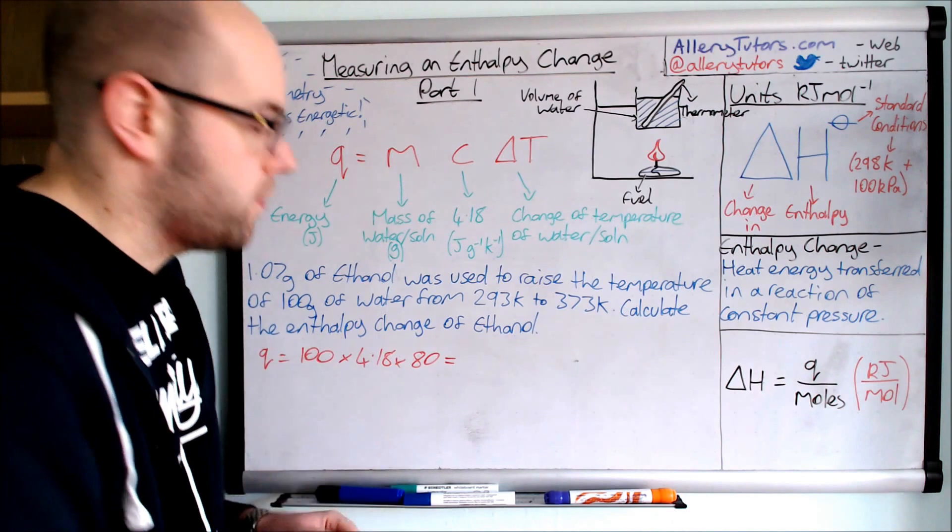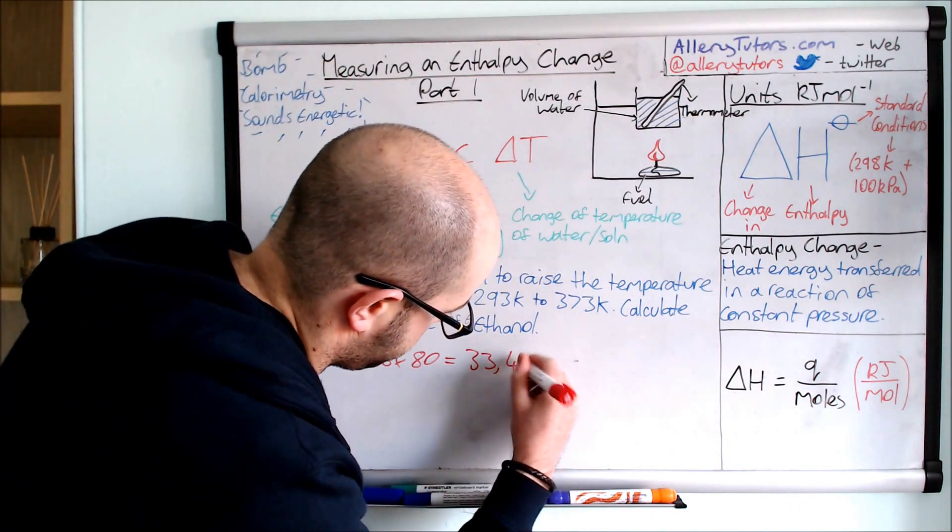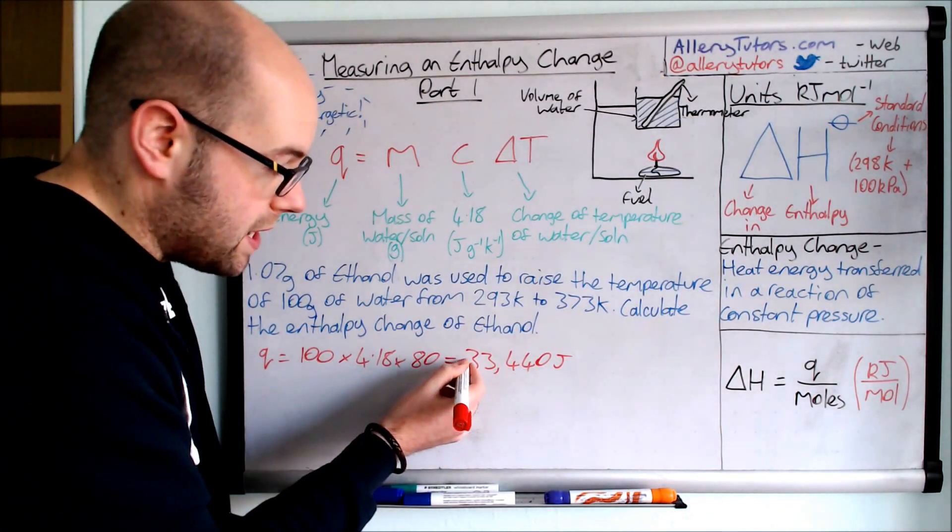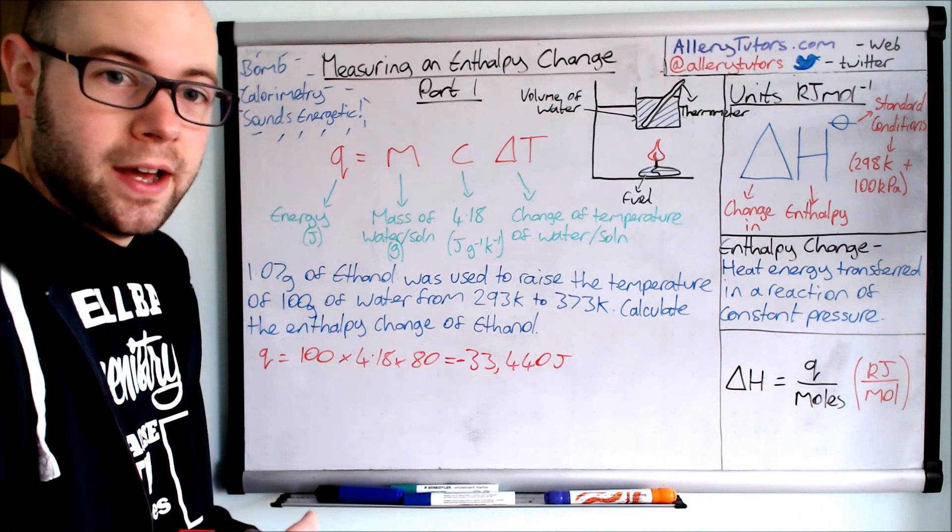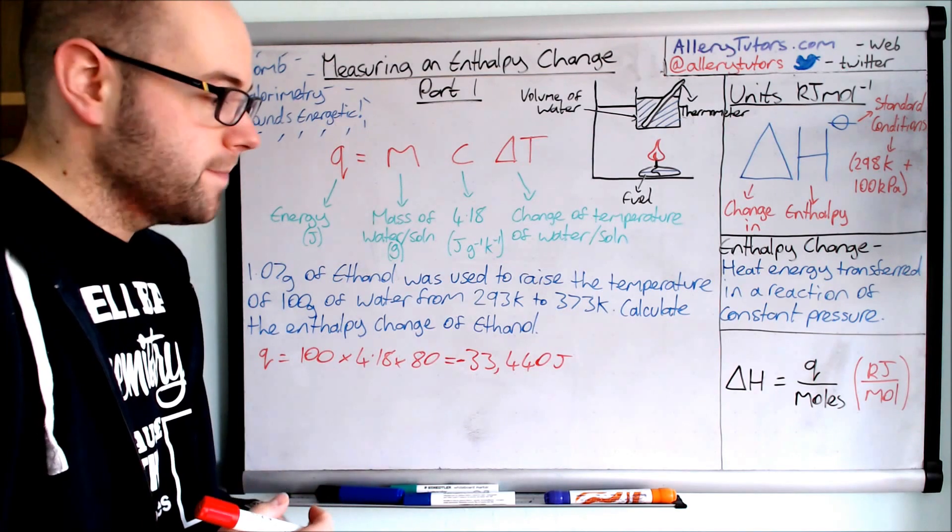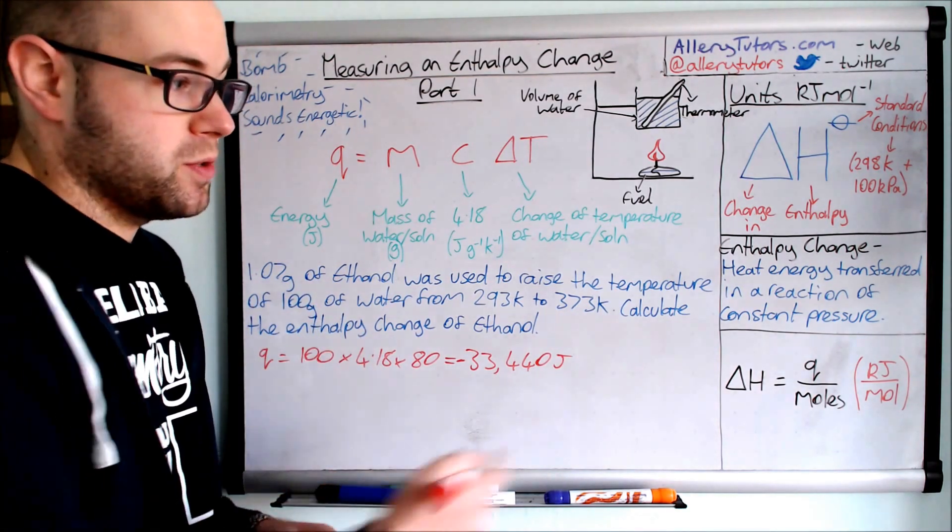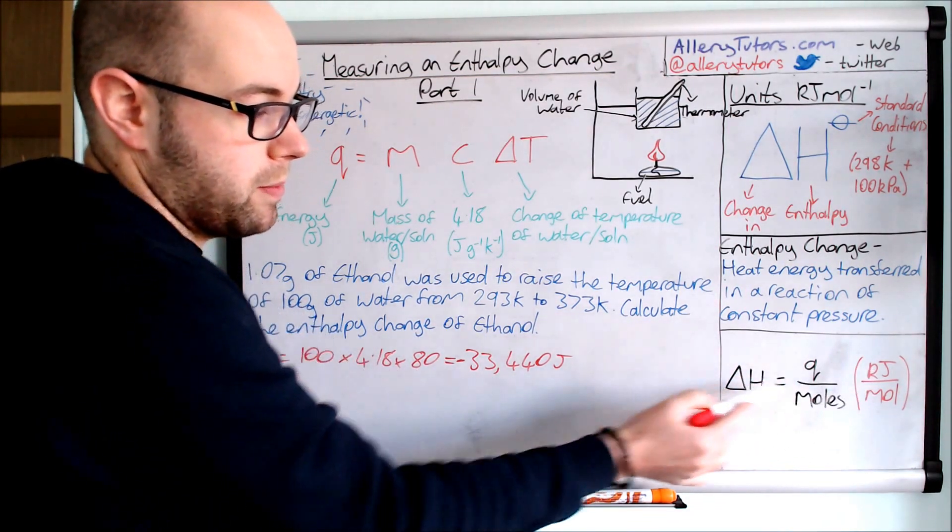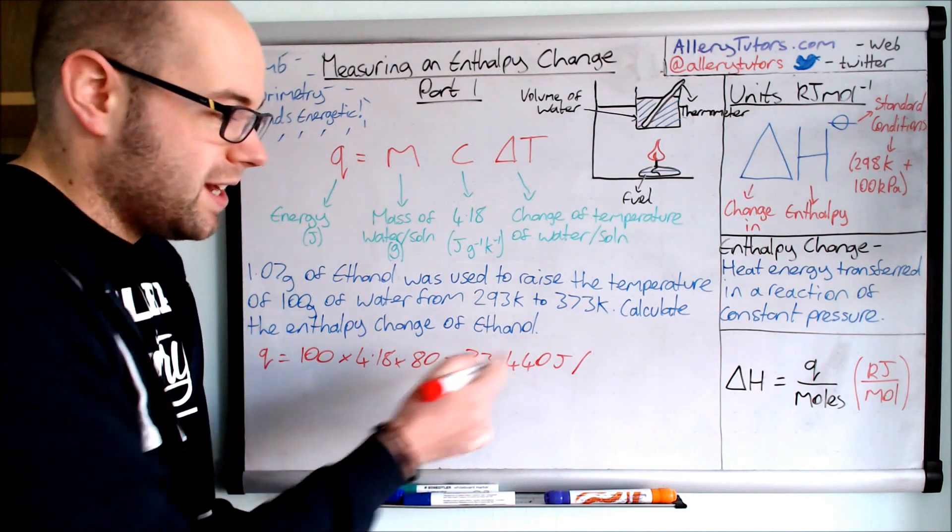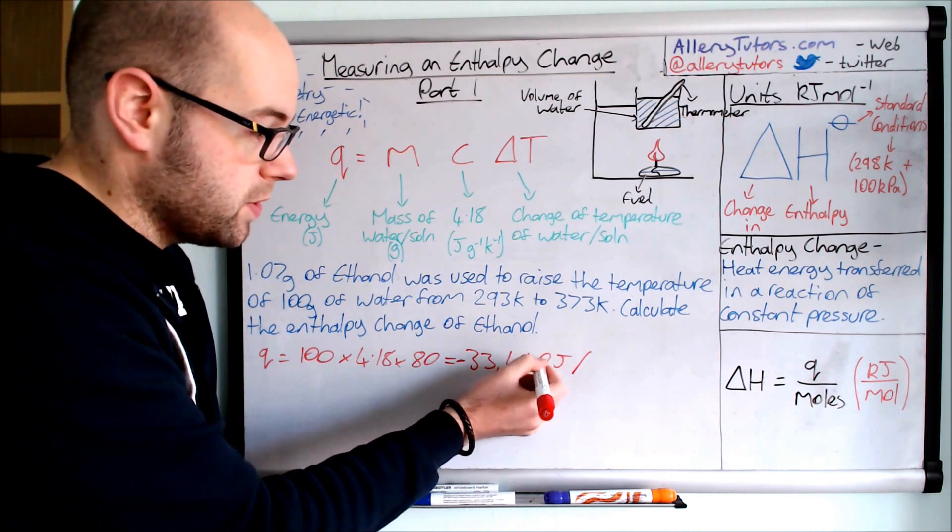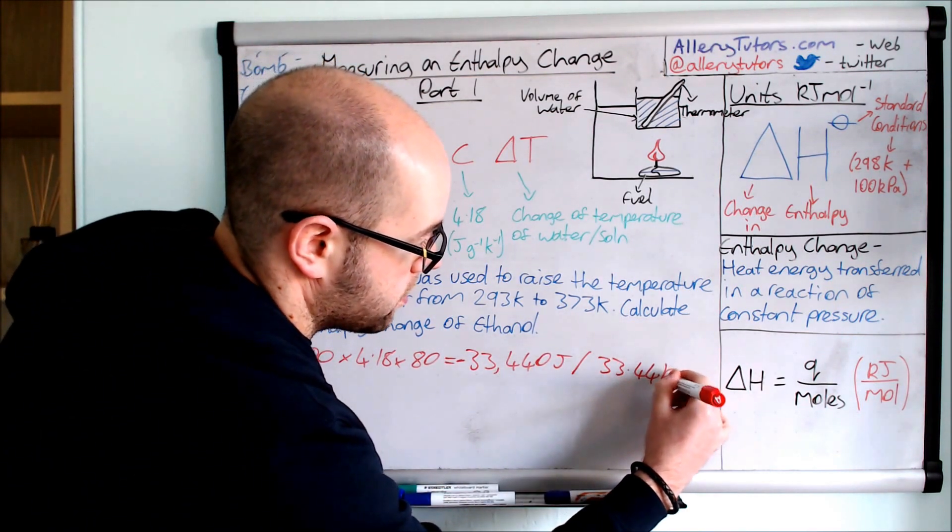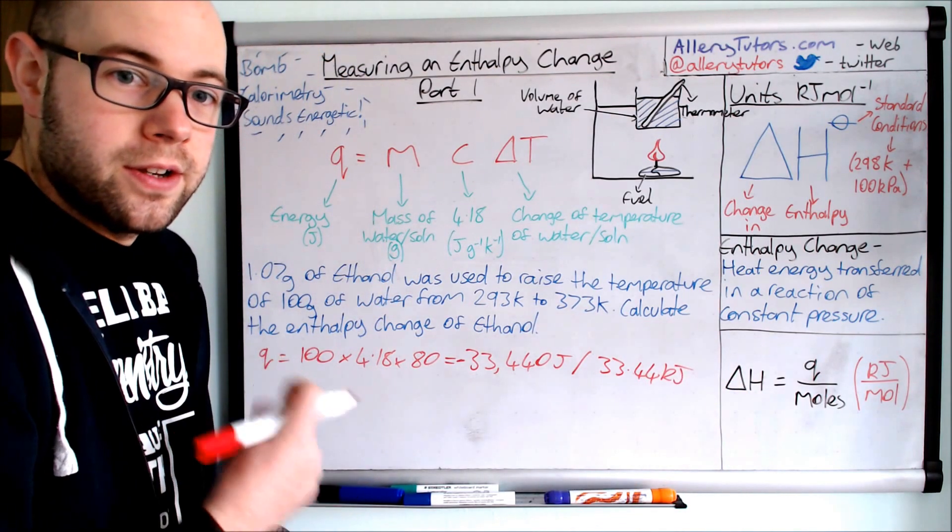If you put all this into your calculator you should come out with a value of 33,440 and this is in joules. Now this is really important actually and we need to put a negative sign in front of that. The reason why is because this reaction is exothermic, we're actually combusting a fuel so it's given out heat energy. Now what we can do is simplify that because we need to get it into kilojoules per mole. When we're working out enthalpy change it may be a good idea to convert this at this point into kilojoules. That's dead easy, all you do is you just divide by a thousand, move the decimal point back three spaces. So that's going to be -33.44 kilojoules. That's our energy, not the enthalpy.